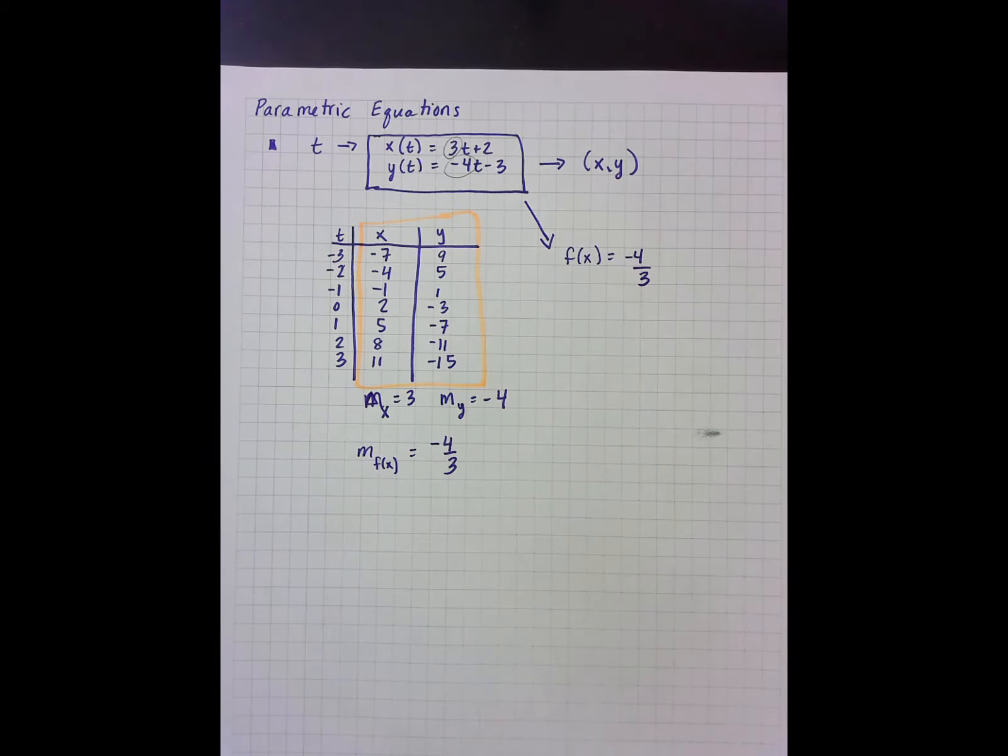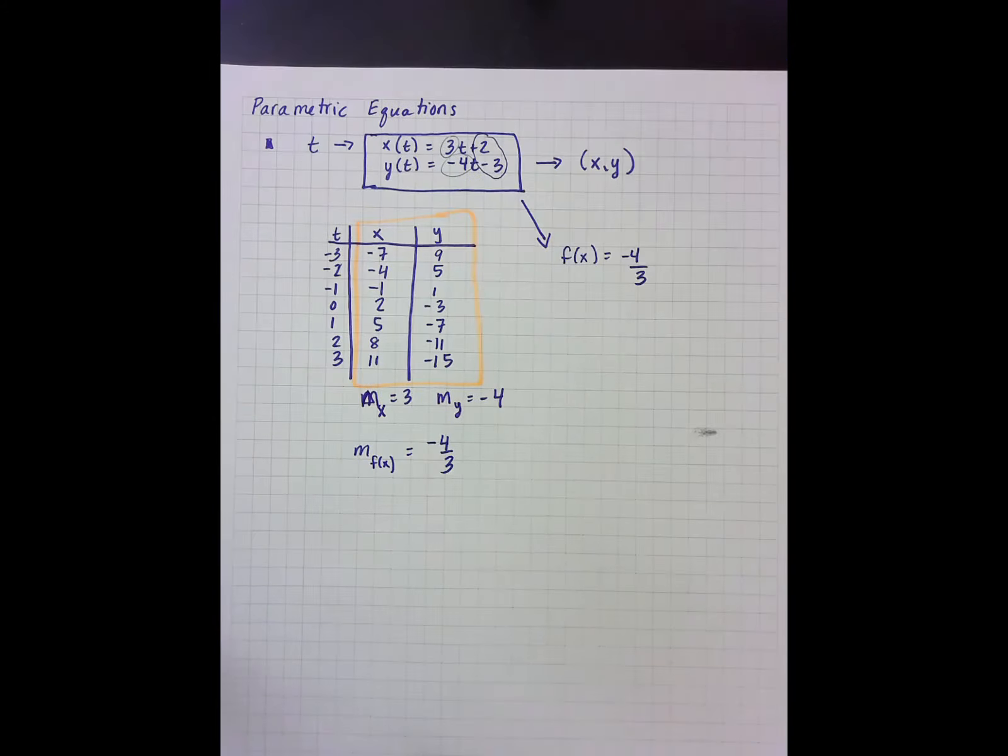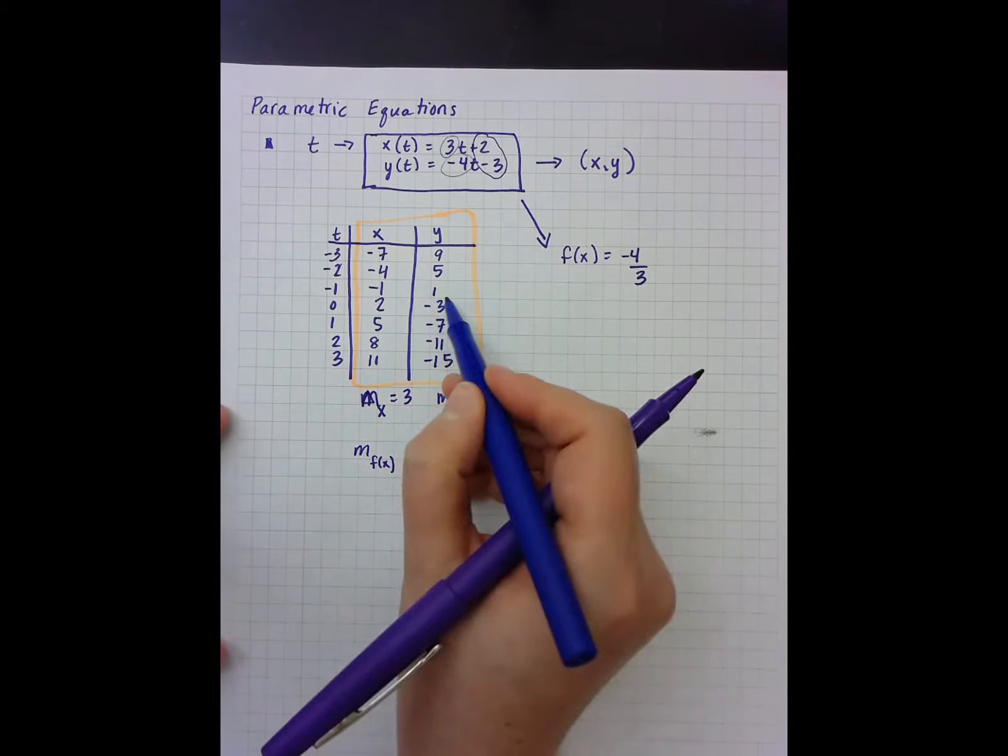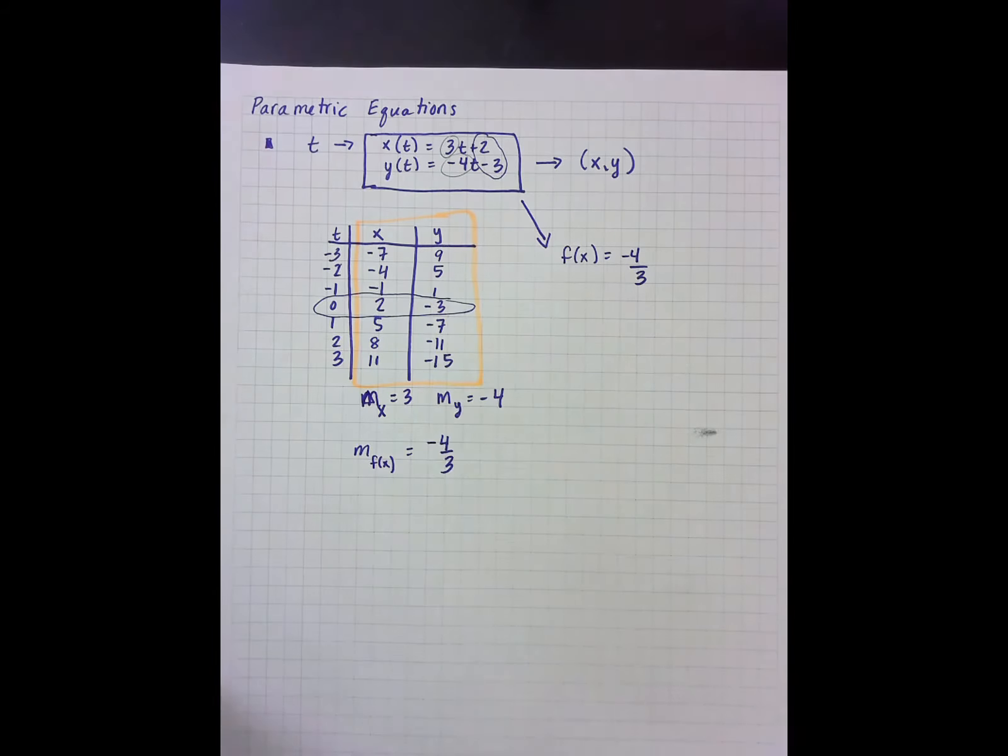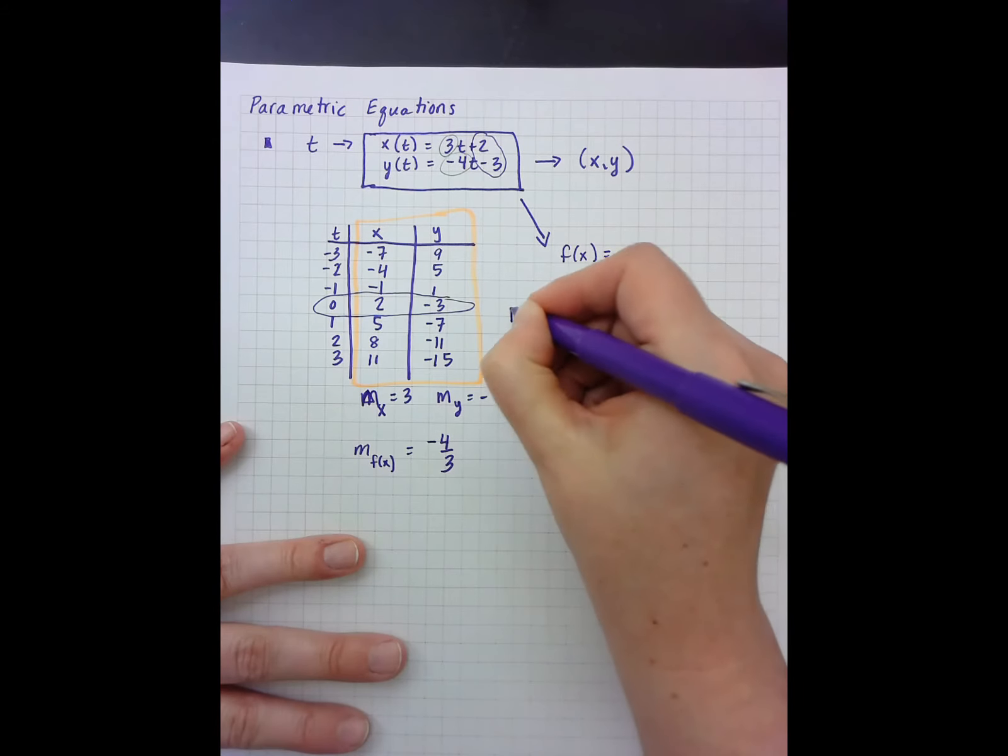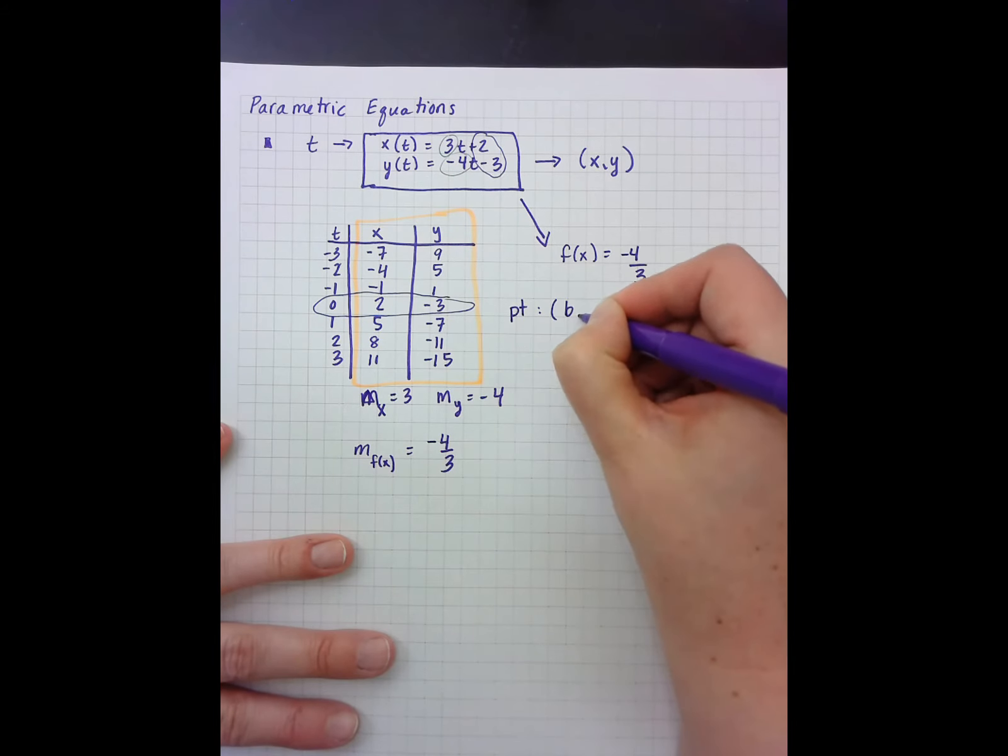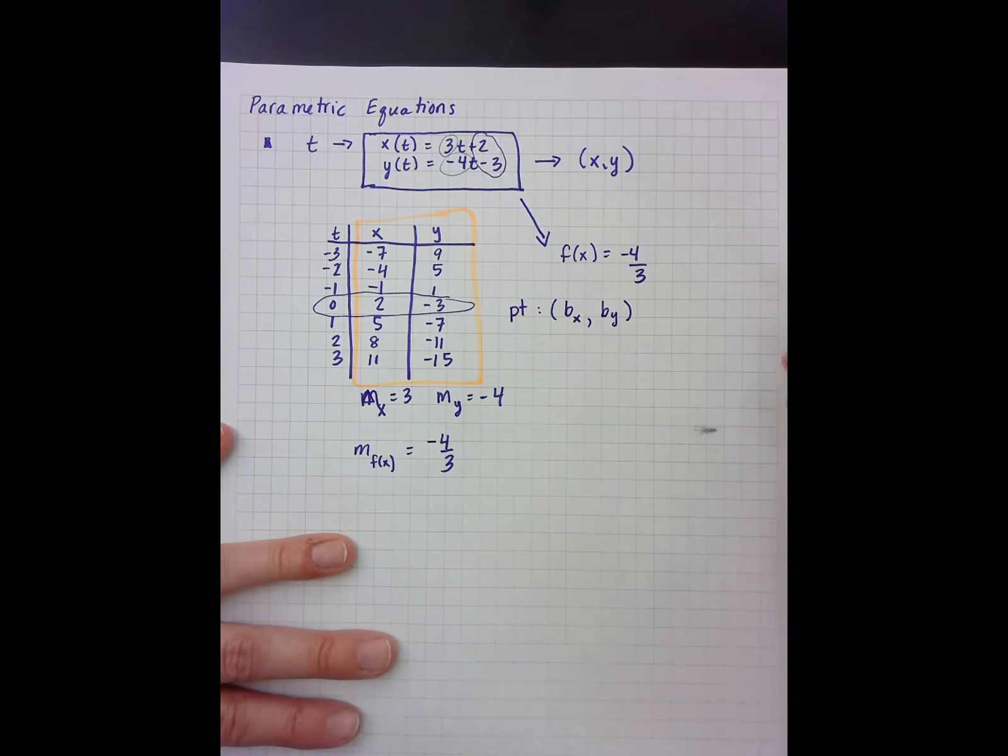It also turns out that the 2 and the negative 3 here actually appear in our table. They appear right here as a point. And so it means that I have a point and the point will be the b of the x function and the b of the y function. So my point here is 2, negative 3.